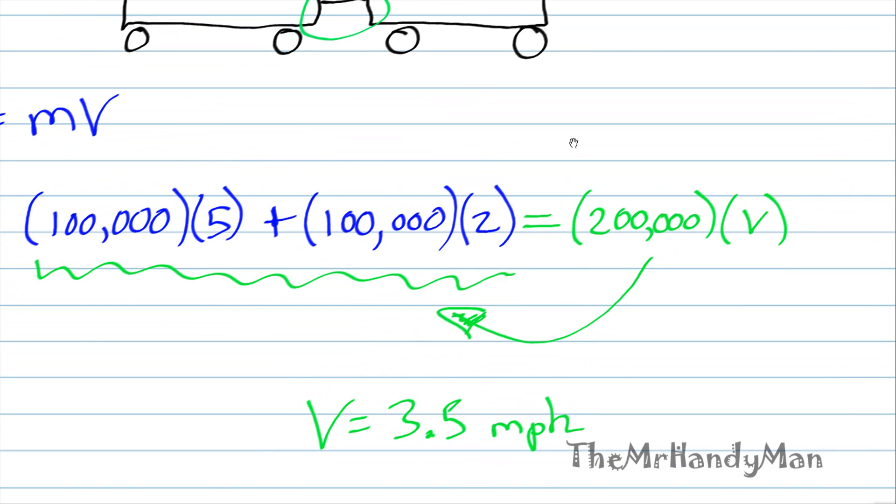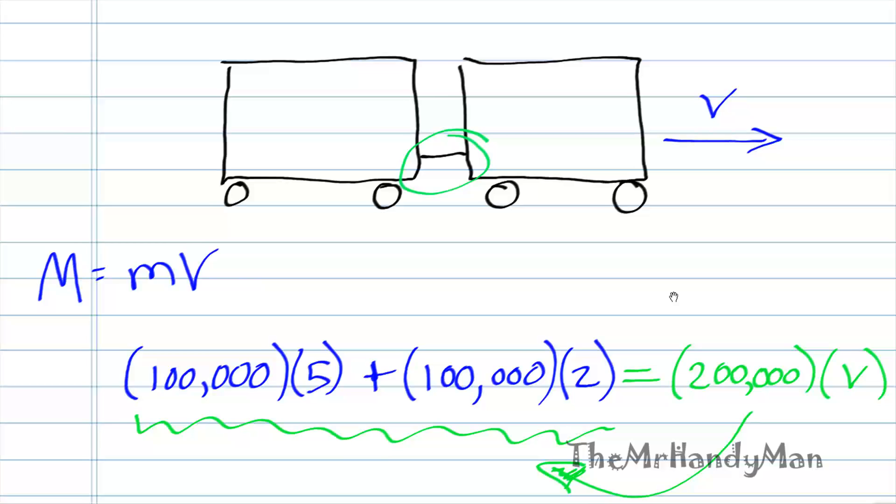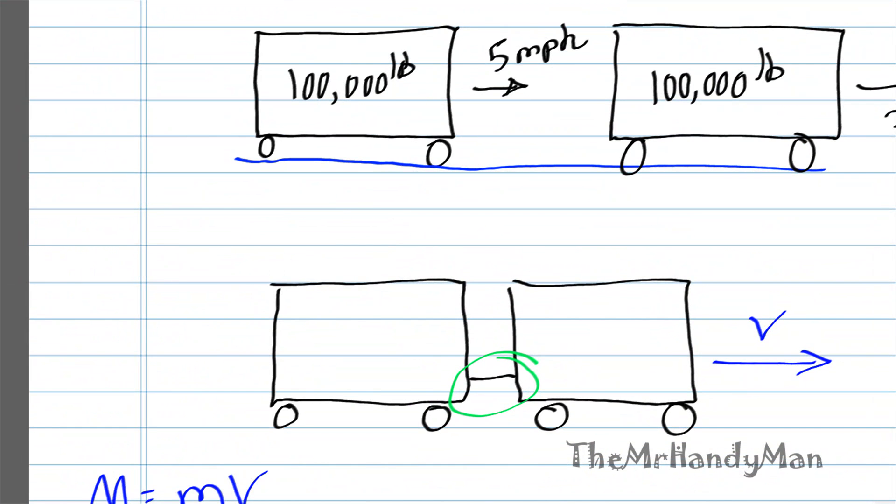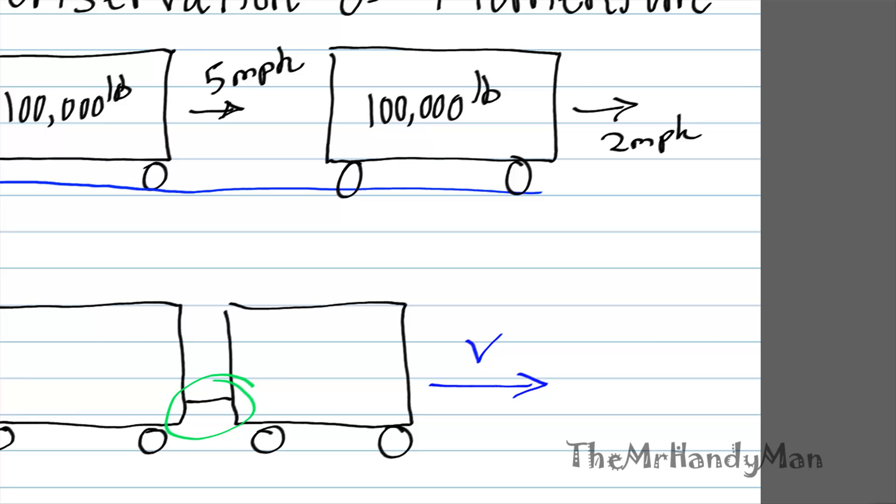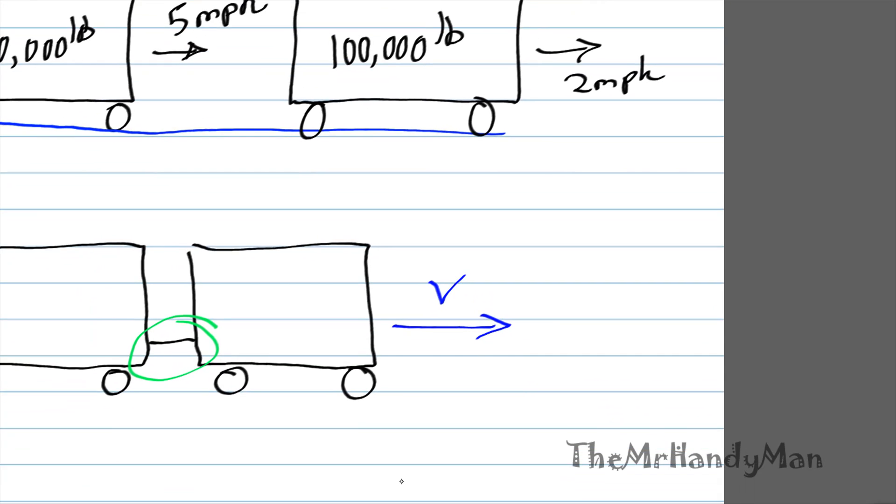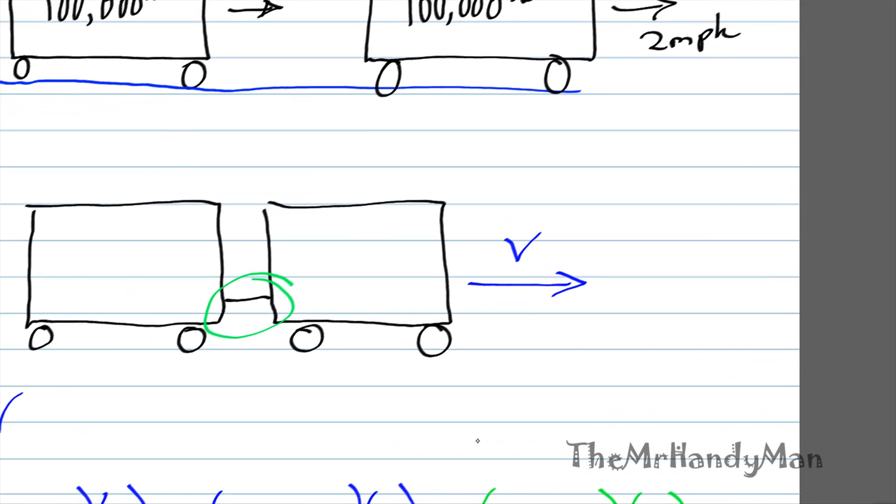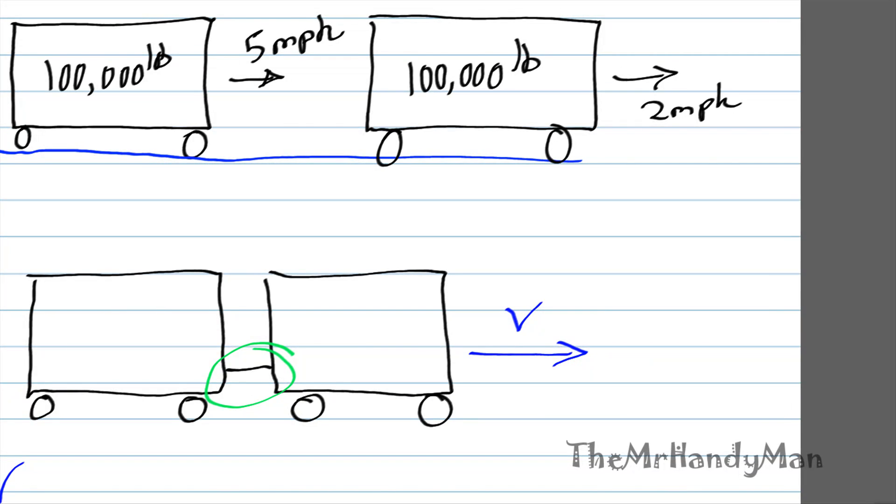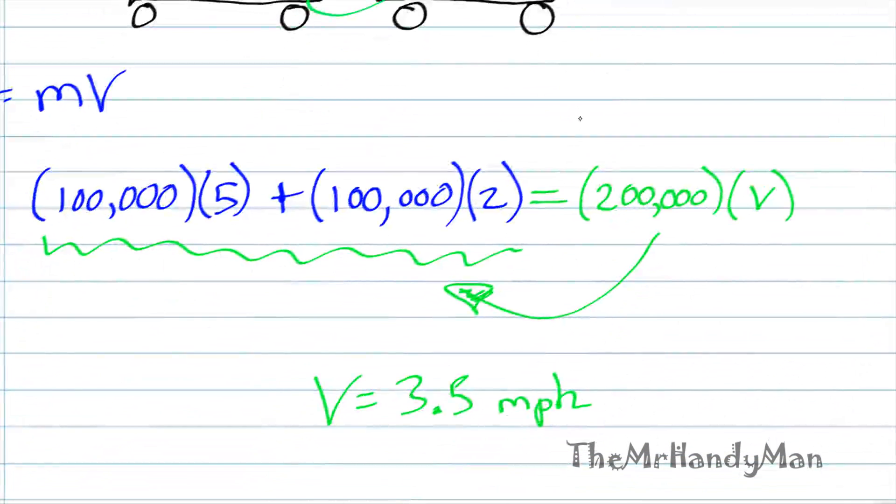And as you can see, when the first cart crashed into the second one, all that energy was then converted to bring both carts' speed up to 3.5 miles per hour.